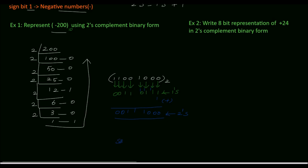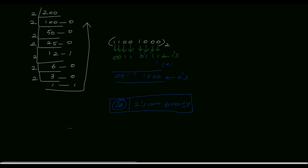The syntax to represent signed numbers in 2's complement form is: sign bit followed by the 2's complement of the binary number. The sign bit is the leftmost bit. Since we need to represent minus 200, the sign bit is 1 for a negative number, followed by the 2's complement 0011100. So the final answer is 1 00111000.